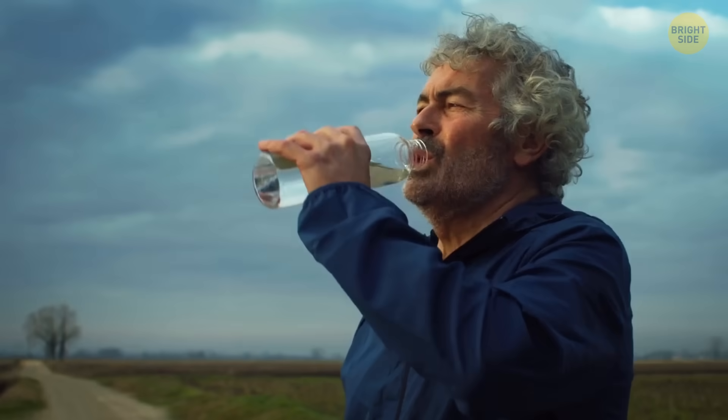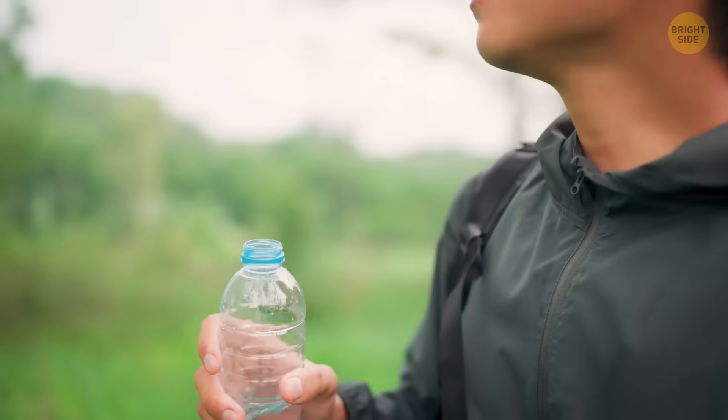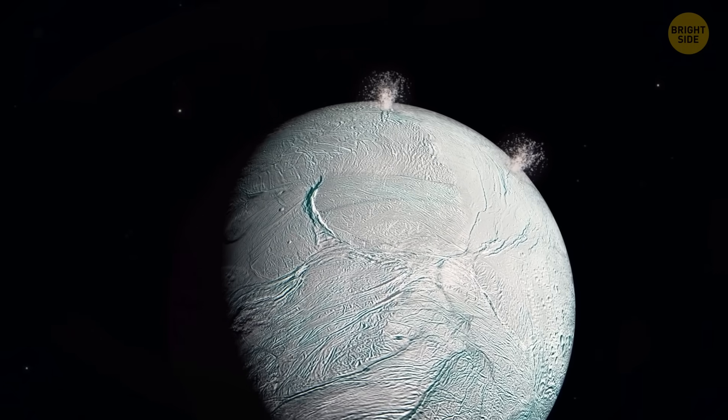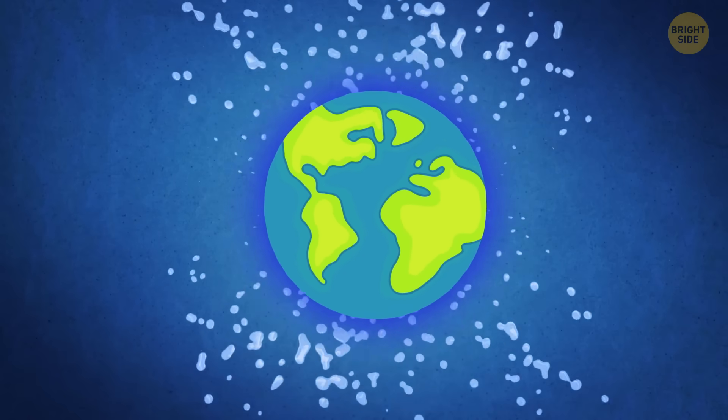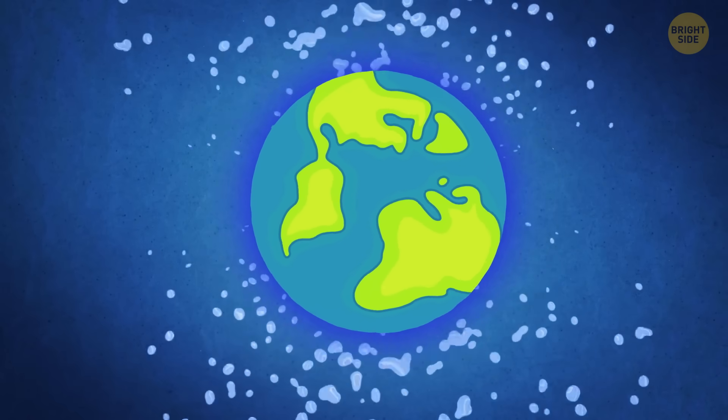Water is essential for life, and scientists are always on the lookout for other habitable planets and stars with it. But did you know that Earth's water might have come from outer space?